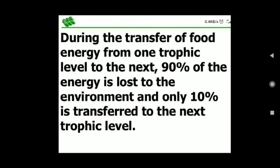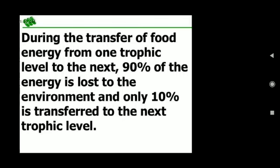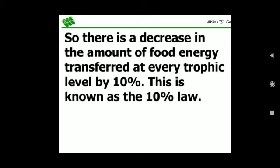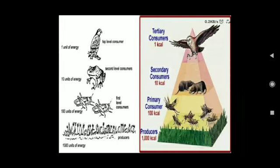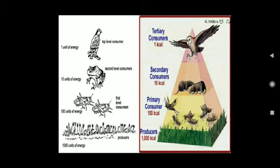There is a decrease in the amount of food energy transferred at every trophic level by 10 percent, and this is known as the 10 percent law. Second, the flow of energy is always unidirectional — once energy is transferred from one trophic level to the next, it cannot revert back. In the diagram, with 1000 units of energy, producers take 1% and then pass only 10 percent of their energy to the next level. That is all for today, thank you.